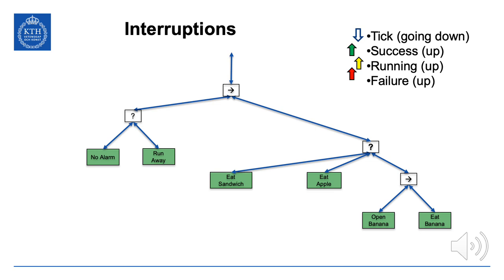To illustrate interruptions we have two subtrees: on the right, the eating subtree from the previous slide; on the left, a fallback of 'no alarm' and 'run away' — so either there's no alarm or you run away. When the tick comes to the root and progresses to the leftmost child — no alarm — and no alarm succeeds, meaning there is indeed no alarm, success propagates upward, and the tick proceeds to the eating subtree, eating the sandwich and so on.